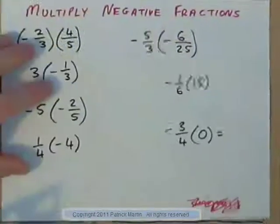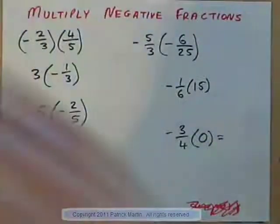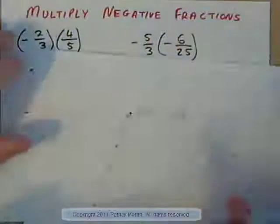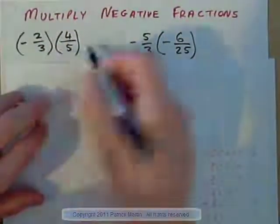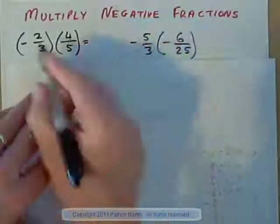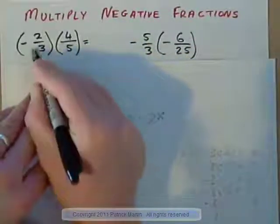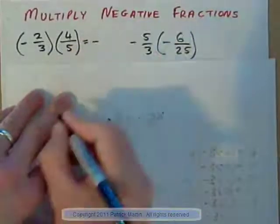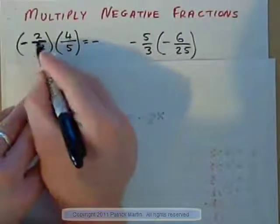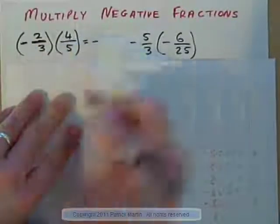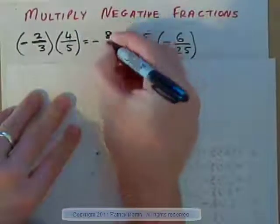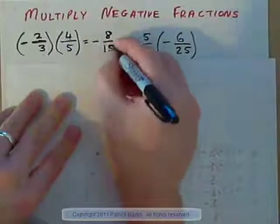Let's have a look at multiplying negative fractions. We'll start off with negative 2/3 times positive 4/5. Negative times positive — do the sign first — negative times positive is negative. Notice how the negative sign is in line with the fraction bar; that's how it should be. So it's negative, and we've got 2 times 4 is 8, over 3 times 5 is 15: negative 8/15.